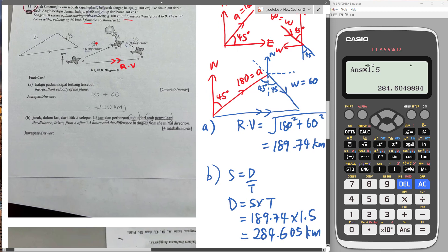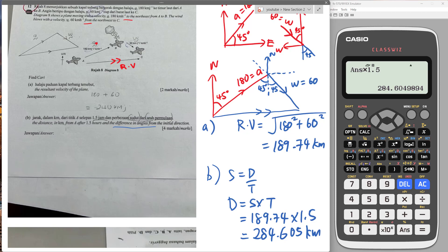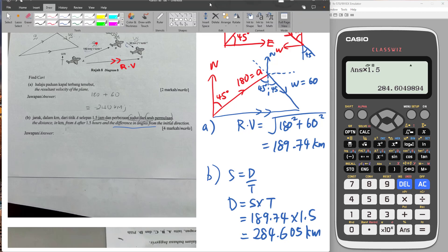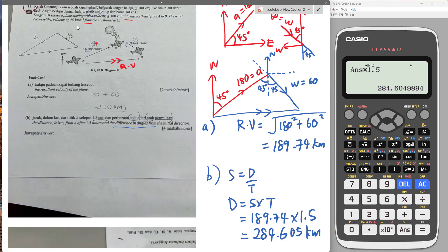They also ask for the difference in angle from the initial direction. The initial direction is 45 degrees. After that, I will travel at this specific angle here. The initial bearing is 45. This is my actual bearing. If the question asks about the difference in angle, the difference is basically in between here. I'll call it alpha.